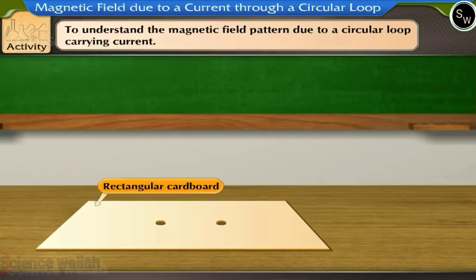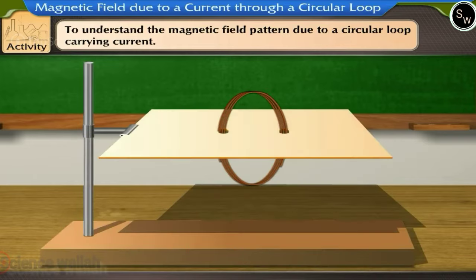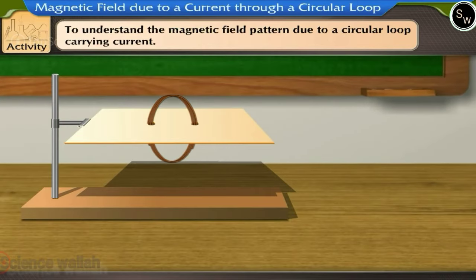Activity: Take a rectangular cardboard with two holes and a coil with a number of turns of conducting wire. Insert the coil through the holes such that the turns are normal to the cardboard. Connect the coil in series with